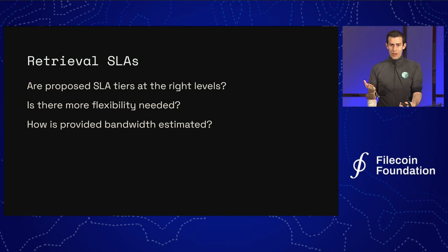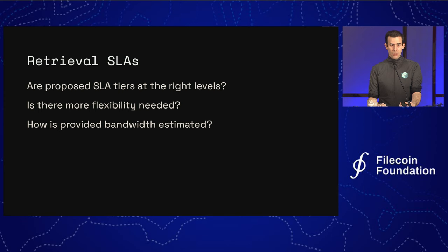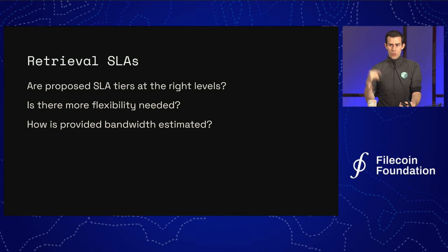A couple of questions to leave you with: Did we get those tiers right? Are those bandwidth levels reasonable? Is there more flexibility needed — other points in that spectrum we should also be standardizing? And then how do we understand what the provided bandwidth actually is? We've got some thoughts toward measurement systems to observe how much bandwidth we're seeing from providers. Getting higher certainty — so a client can know that a provider is on a 10-gig link and using about half of it, so they have plenty of capacity — is useful for confidence building. As we refine these measurement tools to help clients understand how much capacity is available, we think that also helps refine this market and lets clients make better choices about how they store their data.